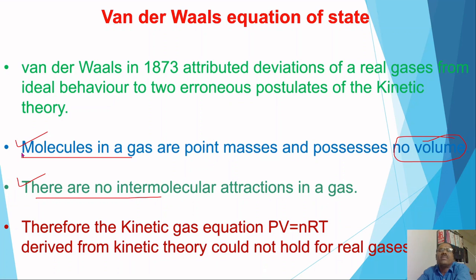Whenever we apply the kinetic gas equation PV = nRT to real gases, the second postulate on which Van der Waals suggested a correction is that there are no intermolecular attractions — meaning the ideal theory suggests no attraction between gas molecules, so they are free to move with different velocities. But in actual practice, in real gases, there are appreciable intermolecular attractions, and hence we must correct the pressure P when applying the kinetic gas equation to real gases.